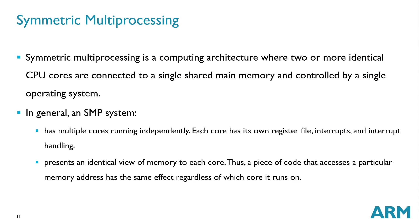FreeRTOS running on the ESP32 gives us what we call an SMP system — symmetric multiprocessing. It's basically a computing architecture where two or more identical CPU cores are connected to a single shared main memory and controlled by a single operating system. When FreeRTOS is running, it is inherently controlling both cores, and we are able to run multiple threads on both cores and achieve concurrent parallel execution.